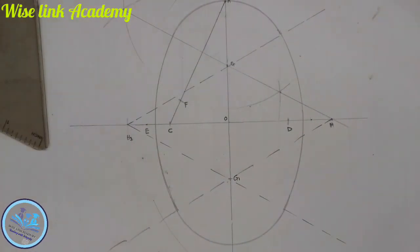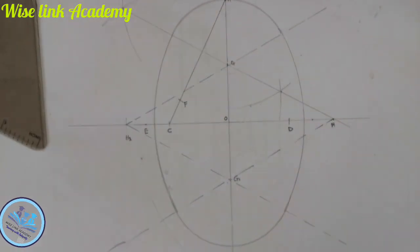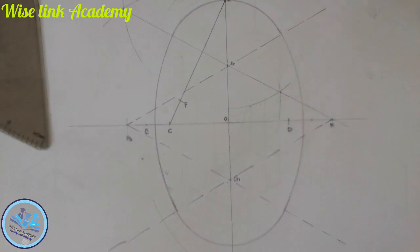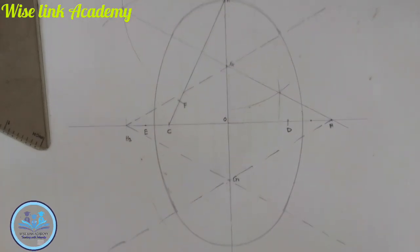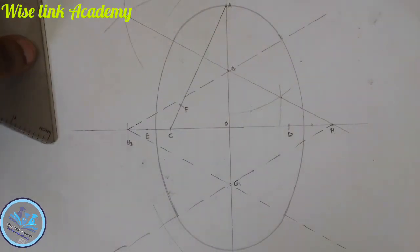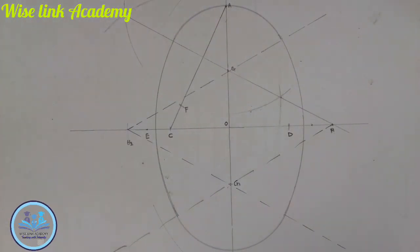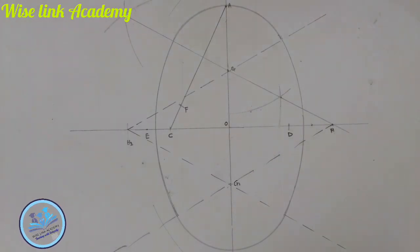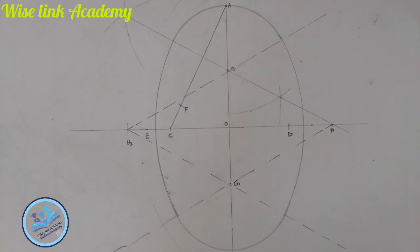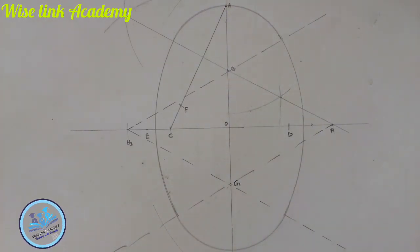We have drawn our ellipse using what we call the approximate method. If you found this video helpful, kindly click the subscription button and like. Thank you, welcome to Wiselink Academy. In our next video, we will be doing how to draw an ellipse using the auxiliary method, also called the concentric method. Thank you very much, thanks for watching.